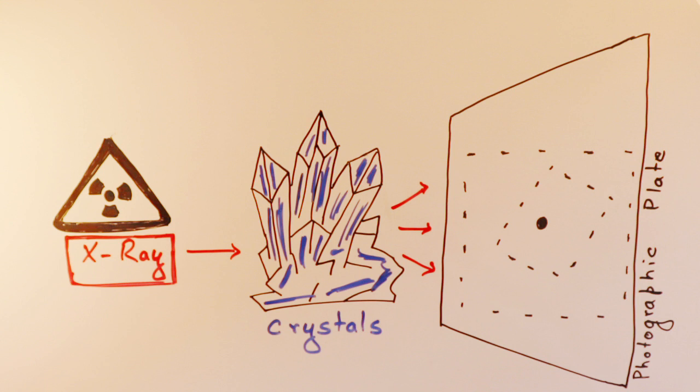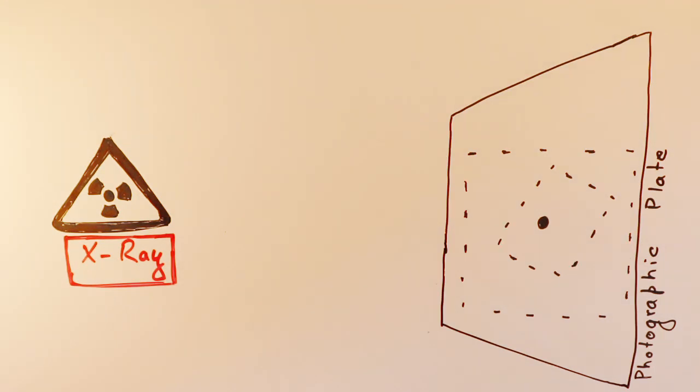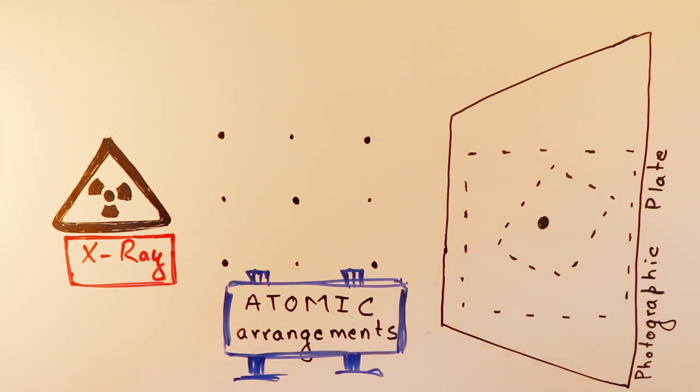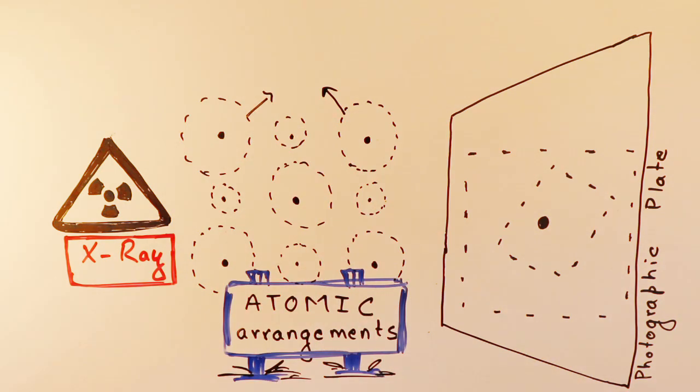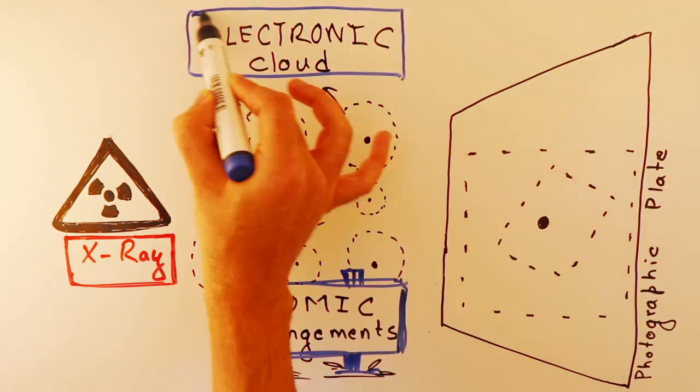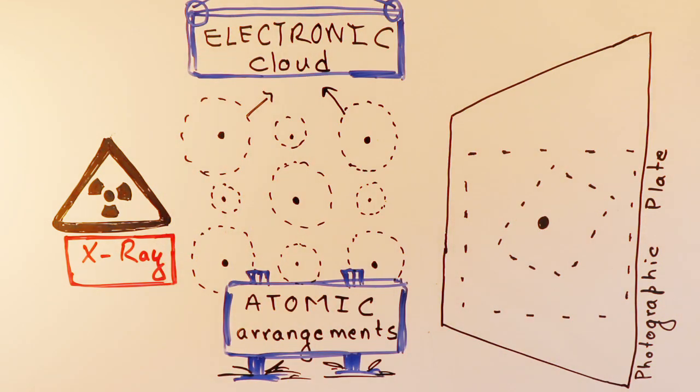By now, you must have realized the diffraction pattern is a fancy way to say the array of dots. From these array of dots, you can work out the position of atom in your crystal. And the intensity of the scattered ray is carrying the information of electron density at the point from which it is scattered. These diffracted dots are the fingerprint of the atoms or molecule inside the crystal.